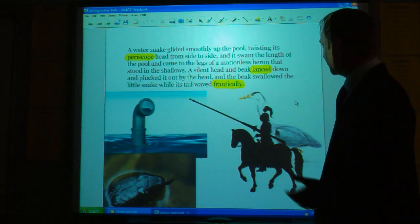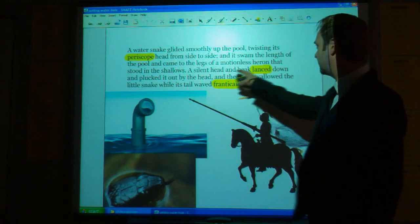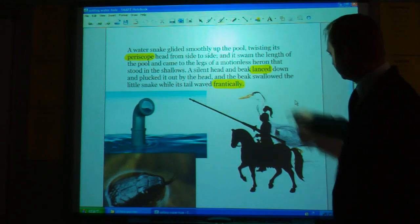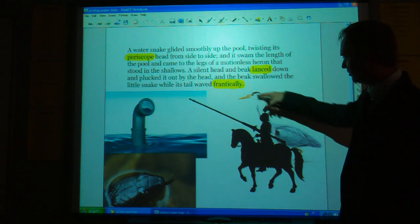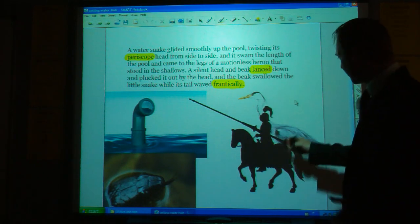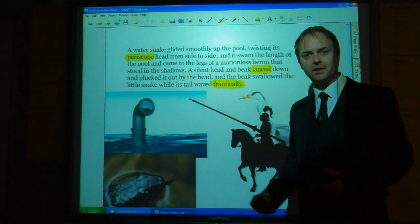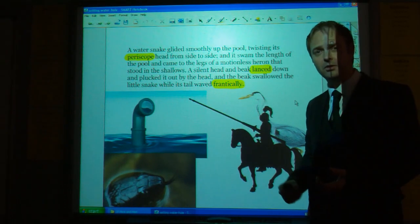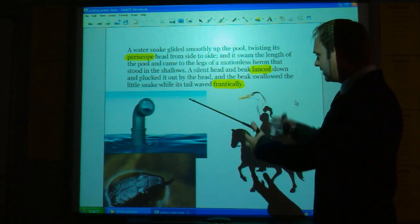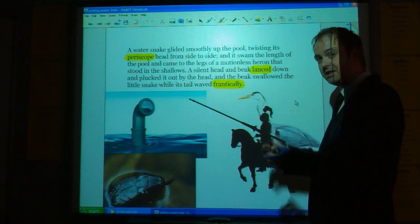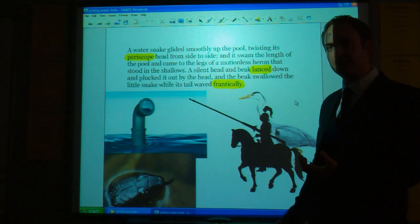It's the same with the heron. In terms of the verb, a silent head and beak lanced down. This head and beak is compared to the lance of a knight. Again, a weapon used to kill. So that semantic field of weaponry, of death, is being applied to the animals.